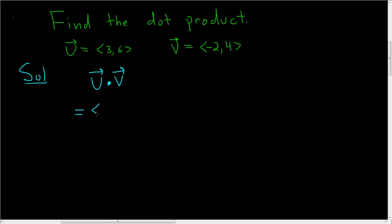So this is equal to the vector u, which is 3 comma 6, and we're taking the dot product of that with the vector v, which is negative 2 comma 4.